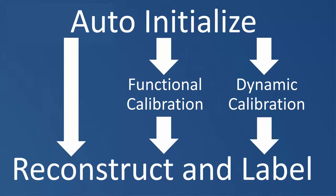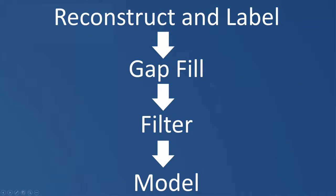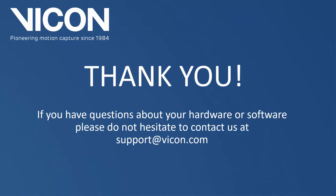To summarize this video, I have shown you the three methods you can use to auto-label your dynamic trials. Once you have finished auto-labeling your trials, you will still need to process your data. This may include gap filling, filtering, and modeling your data. Thank you for watching this video. If you have any questions, please don't hesitate to contact us at support@vicon.com.